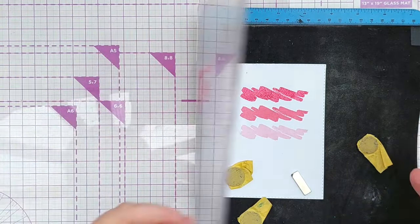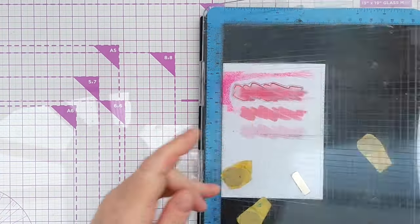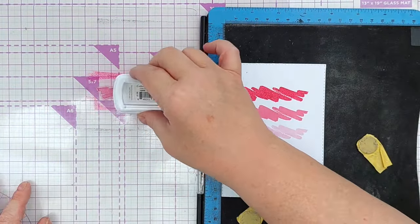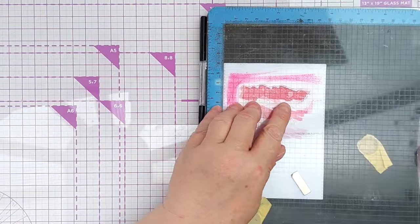And so now I've got three stripes in three different saturations of red stacked one on top of the other.